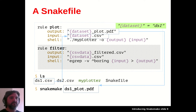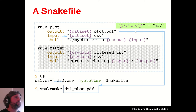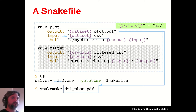Once Snakemake has made its work plan, it works through the rules — taking the shell command template and substituting in the output ds1_plot.pdf and the input ds1.csv, then running the shell command. So far so simple: Snakemake has run one single rule.